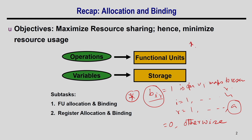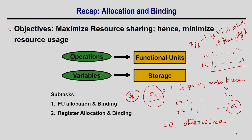There is one more variable XIL, which we discussed during ILP formulation of the scheduling problem. XIL equals 1 if Vi starts at timestamp L, where I varies from 1 to N and L from 1 to lambda. Lambda is the latency of the design. For a single-cycle operation, the start time is also the end time, but for a multi-cycle operation starting at L, it spans L, L+1, up to L+Di−1, where Di is the delay of that operation.